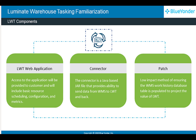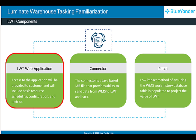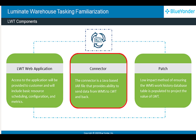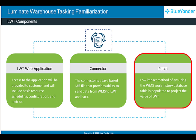LWT is composed of the web application and connector. The web application works on the Azure platform. Customers get access to the application that includes basic resource scheduling, configuration, and metrics. The connector is a Java-based JAR file that has the ability to send data related to directed work queue with details of orders and shipments, along with their due date and time, from WMS to LWT and vice versa. The current patch on LWT includes a low-impact method of ensuring that the WMS Work History database table is populated to project the value of LWT.